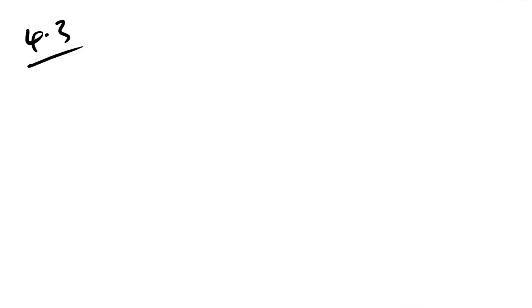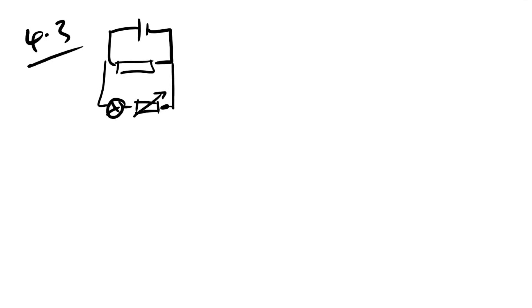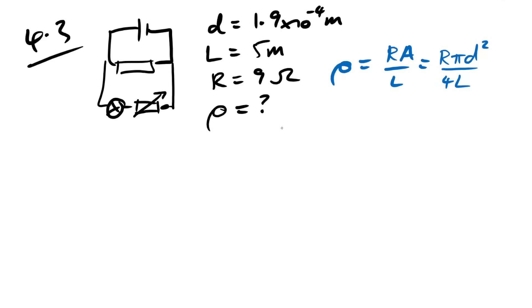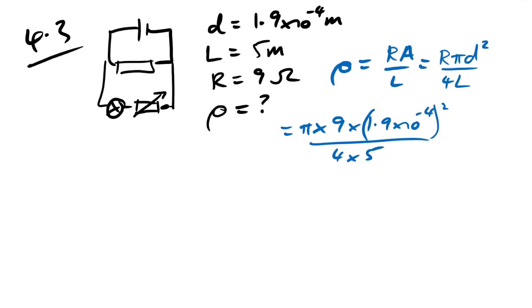Question 4.3: the variable resistor has diameter 0.19 mm (1.9×10⁻⁴ m), length 5 m, and resistance 9 Ω. Resistivity = R×A/L = R×πd²/(4L) = π×9×(1.9×10⁻⁴)²/(4×5) ≈ 5.1×10⁻⁸ Ω·m.